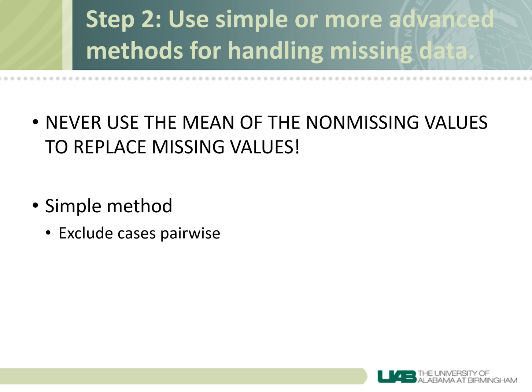Another potential option is to exclude cases listwise. This method excludes cases that don't have full data on all variables, which can be a problem because it can really reduce your sample size. But it is a reasonable method if you're missing only a very small percentage of total sample size, say like 2% or less. Finally, if too much data is missing to exclude, then you'll want to use something more advanced like imputation.